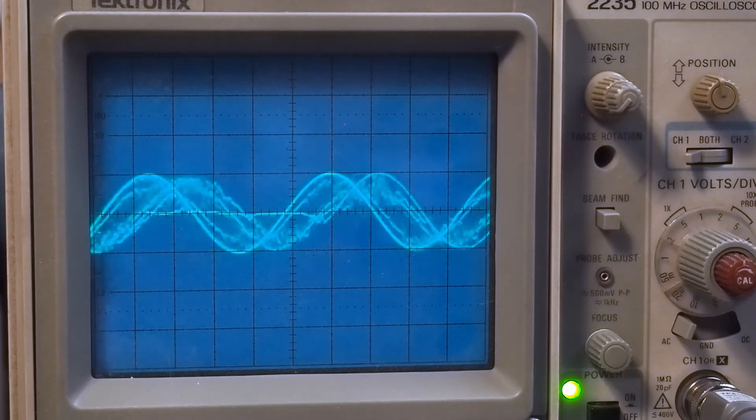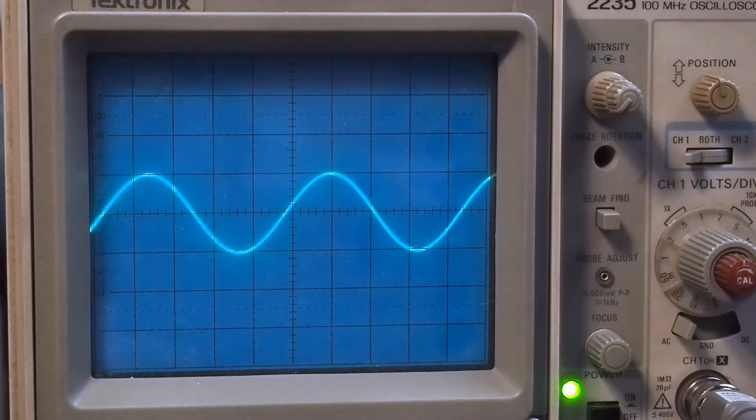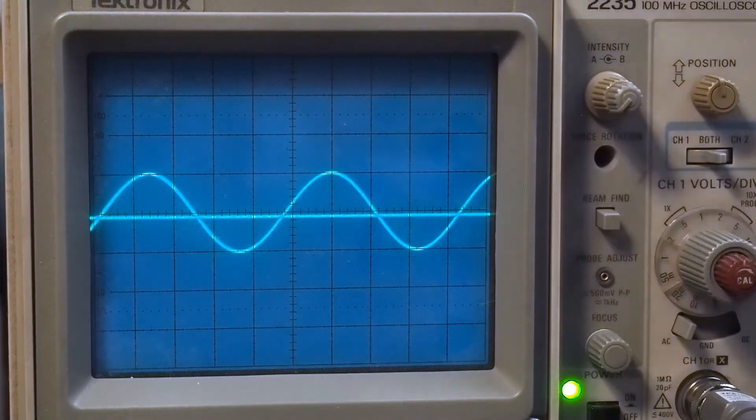Because remember, one channel had the shade feedback resistor connected, and the other one didn't. So we move our probes over to the other channel and switched our input to the other channel. And let's see what this side looks like.